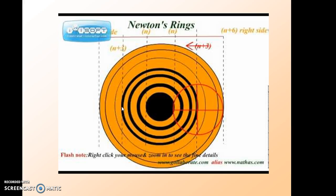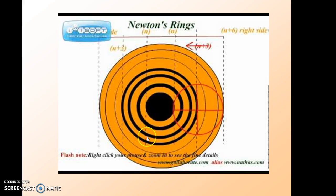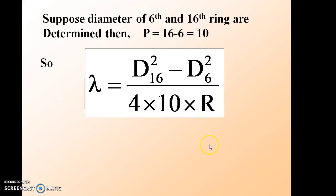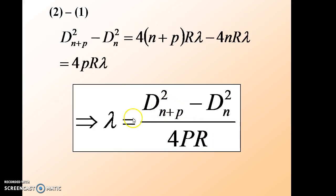To calculate the wavelength, you first move the micrometer towards the left-hand side and align the vertical cross-wire on, say, the first dark ring towards the left. Then move it towards the right-hand side and align on the first dark ring to the right — the difference between these two positions gives the diameter of the first dark ring. Repeat this for, say, the third dark ring, then apply the formula λ equals d_(n+p) squared minus d_n squared divided by 4·p·r to calculate the wavelength.